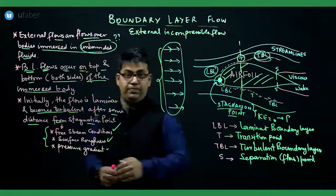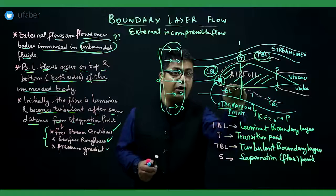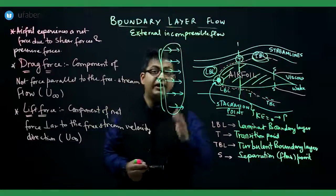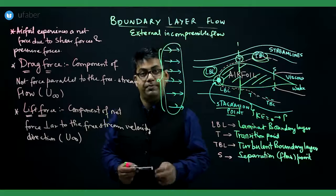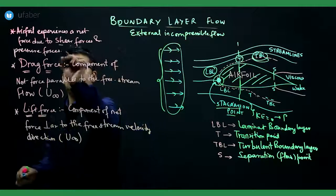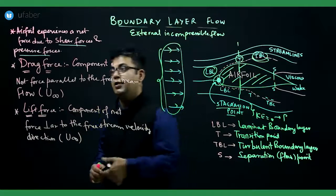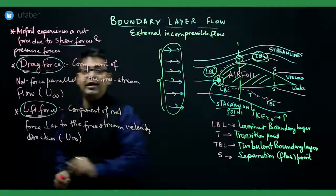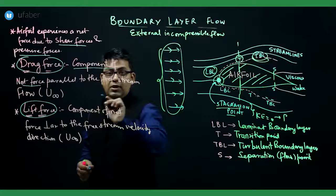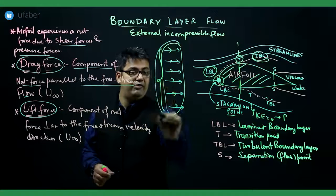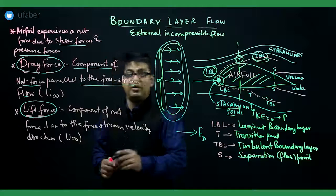Now let's talk about the forces exerted upon this aerofoil due to the boundary layer flow. The net force acting on the airfoil arises from shear forces and pressure forces. There are two components: the drag force and the lift force. The drag force is the component of the net force parallel to the free stream velocity — it is the resistance the body must overcome in order to move forward in the flow.